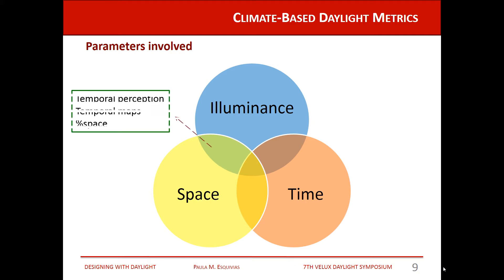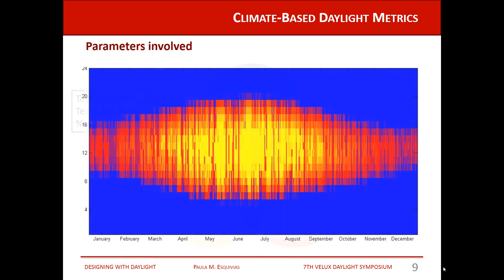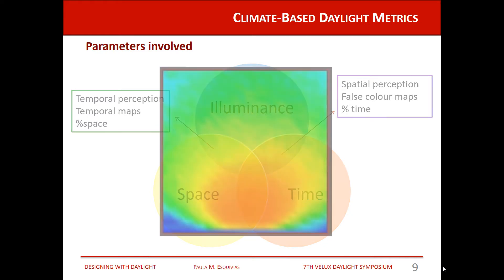If we look at illuminance through space, we get a temporal perception of the performance — for example, information about the percentage of the space. If we look at illuminance through time, we get a spatial perception, commonly shown as a false color map, giving information about the percentage of the time.